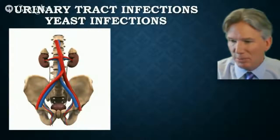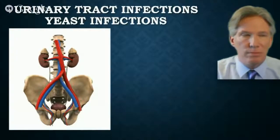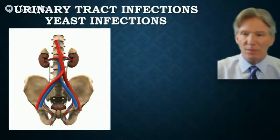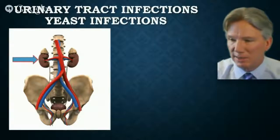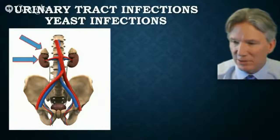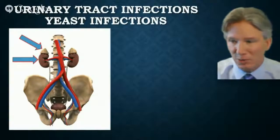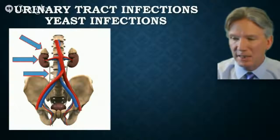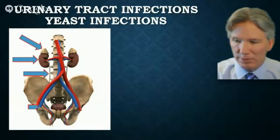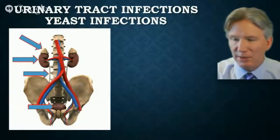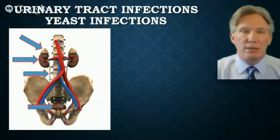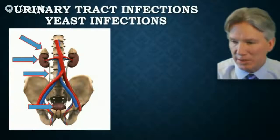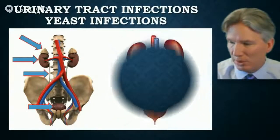Let's take a brief overview of the urinary tract in the human body. This, of course, is the pelvis and the spine. This structure right here is the kidney. This interesting thing sticking on top is the adrenal gland. Of course, there are two kidneys and two adrenal glands. The tube that runs from the kidney to the bladder is called the ureter, and the bladder is down here. From the bladder, it goes into the urethra, and that is where the urine ultimately escapes the human body.